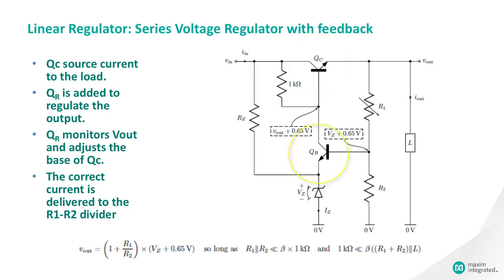QR monitors VOUT and adjusts the base of QC. The correct amount of current is always being delivered to the R1-R2 divider to keep the output at the desired value.